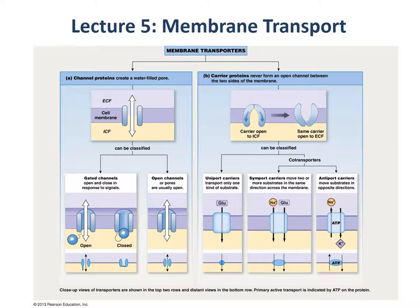Carrier proteins never form an open channel between the two sides of the membrane. They can be integral or peripheral, and they change shape in order to move molecules across a given membrane. They come in three major types: a uniporter, a symporter, or an antiporter.